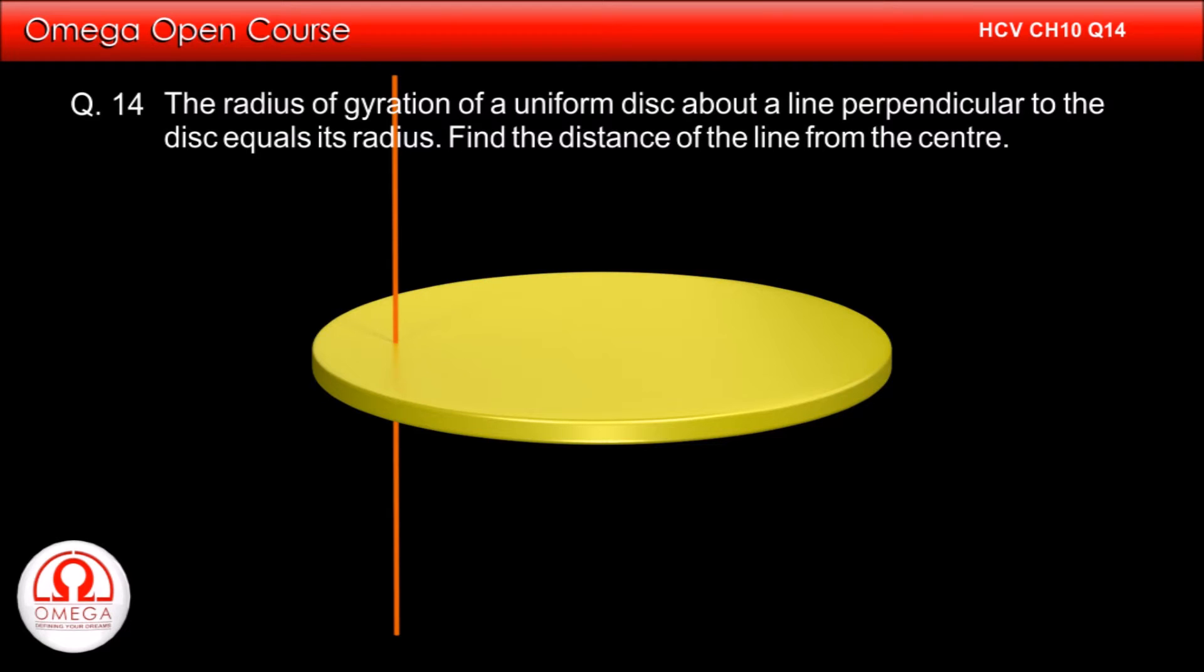The radius of gyration of a uniform disc about a line perpendicular to the disc equals its radius. Find the distance of the line from the center.